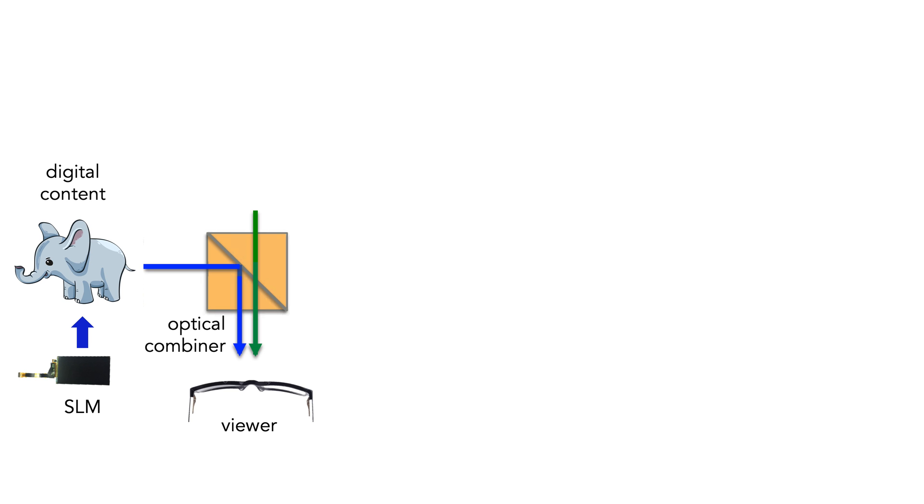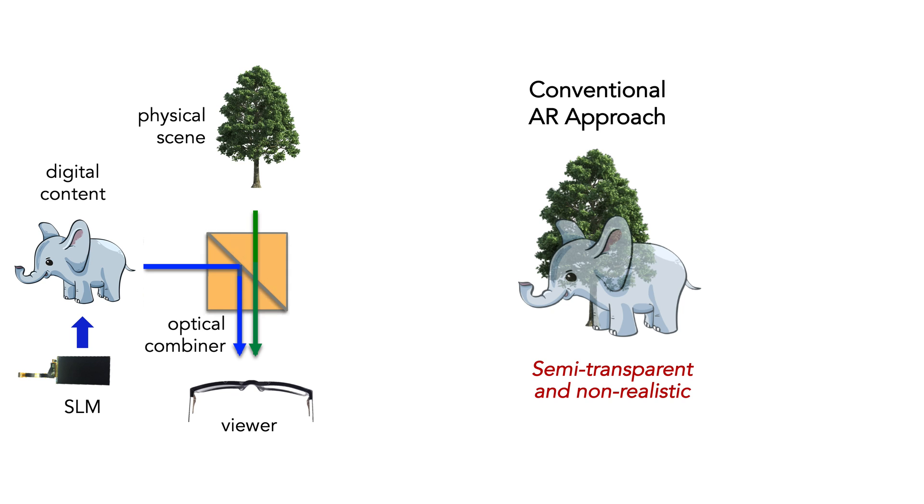Current generation displays use optical combiners that additively superimpose the digital content, as often displayed by spatial light modulator, or SLM, on a direct view of the physical scene. An inability to block real light leads to digital content appearing semi-transparent and non-realistic.